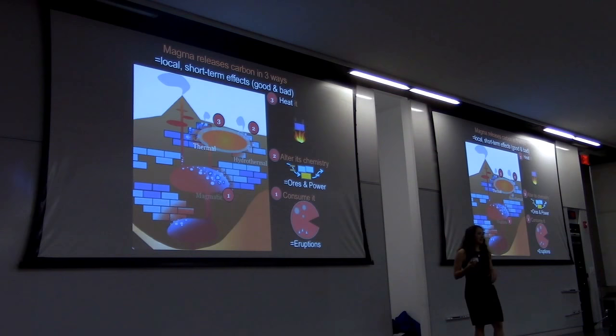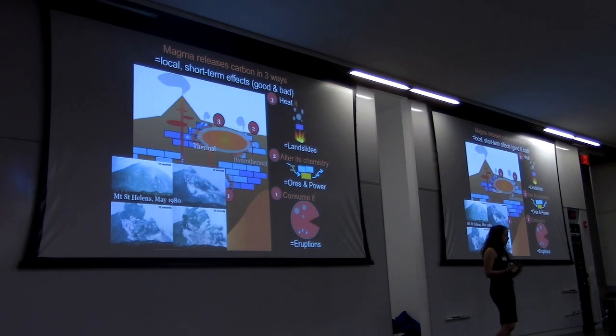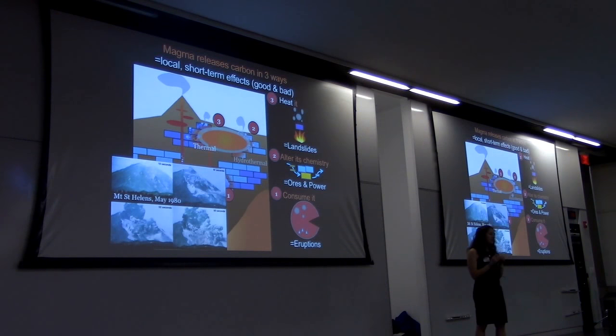The third way is that some rocks actually just break down by heating, releasing the carbon dioxide. This weakens the rock that's left behind, making it unstable. And then we get dangerous landslides like the one at Mount St. Helens in 1980 that triggered the eruption.